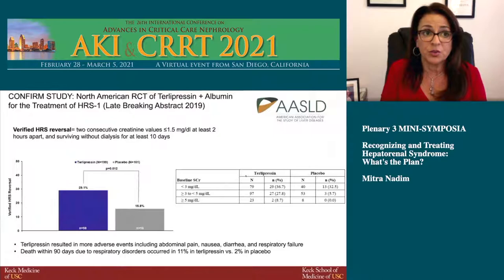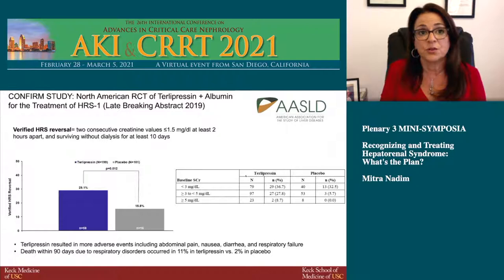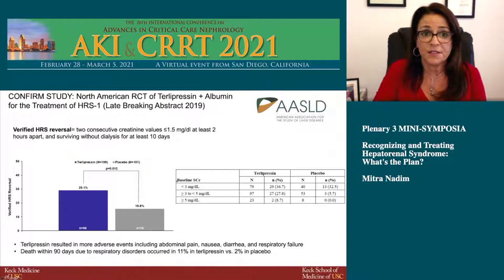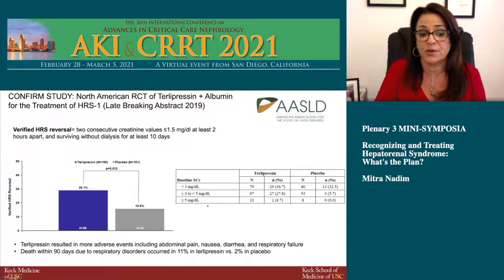Terlipressin has been studied both in Europe and the U.S. There were two large randomized controlled studies in the U.S. that did not meet their primary endpoint. A third study presented as a late-breaking abstract in 2019 — not yet published — was the first U.S. study to show a positive result on the primary endpoint, with terlipressin performing much better, especially when serum creatinine was less than 5. However, patients on terlipressin had more adverse events, mainly respiratory failure, with higher 90-day mortality due to respiratory disorders.